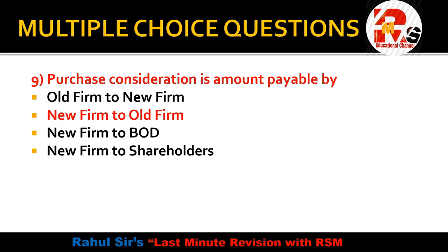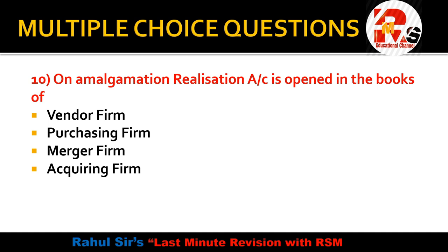Question 10: on amalgamation, realization account is opened in the books of — old company, new company, vendor firm, purchasing firm, merger firm, or acquiring firm? The realization account is opened by the old firm, which is the vendor firm — the selling firm. The vendor firm prepares ledgers and includes the realization account in its old books.